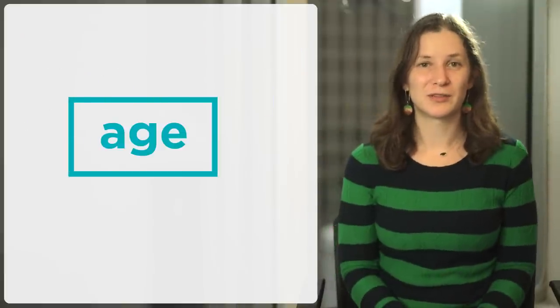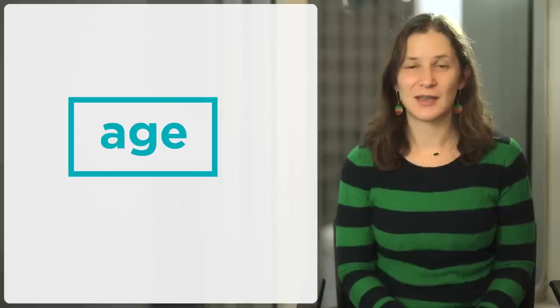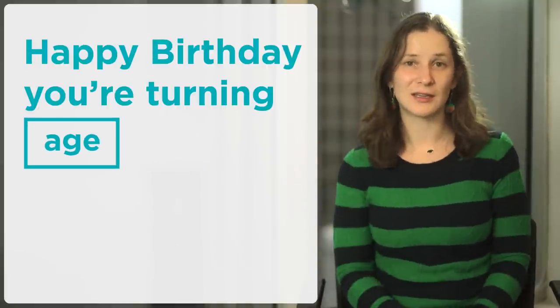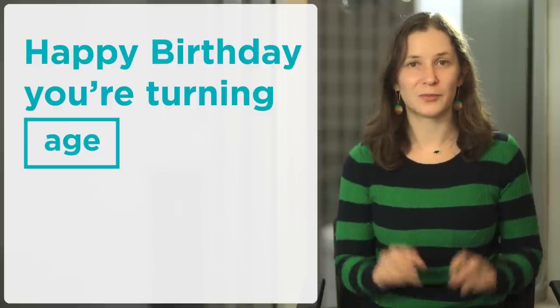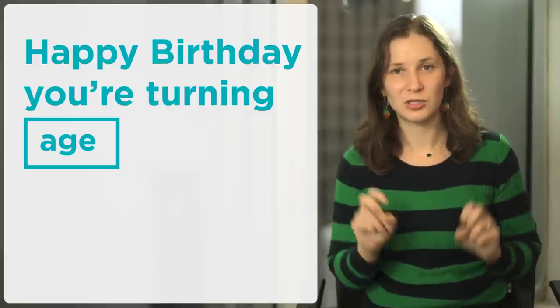I could create a variable called age, store my brother's age, and write my algorithm to say happy birthday, you're turning age instead, because variables can change. Each year, I can update the variable age to equal age plus one.